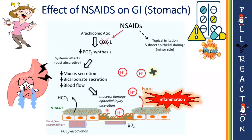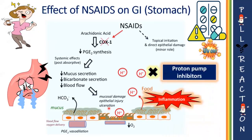This is the reason why proton pump inhibitors are given before food whenever NSAIDs are prescribed. When the protective effect of the stomach mucosal cells is taken down by NSAIDs, we also need to counteract the aggressive effects of gastric acid.